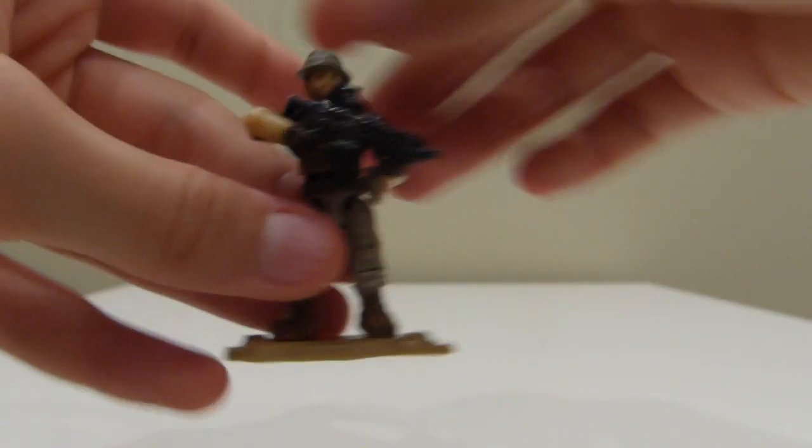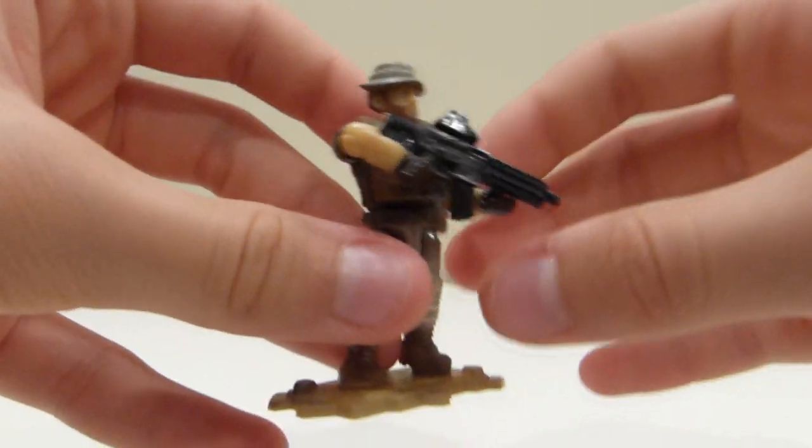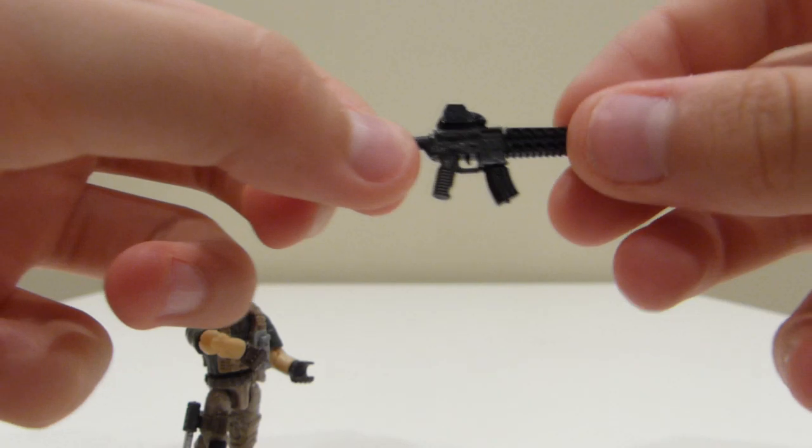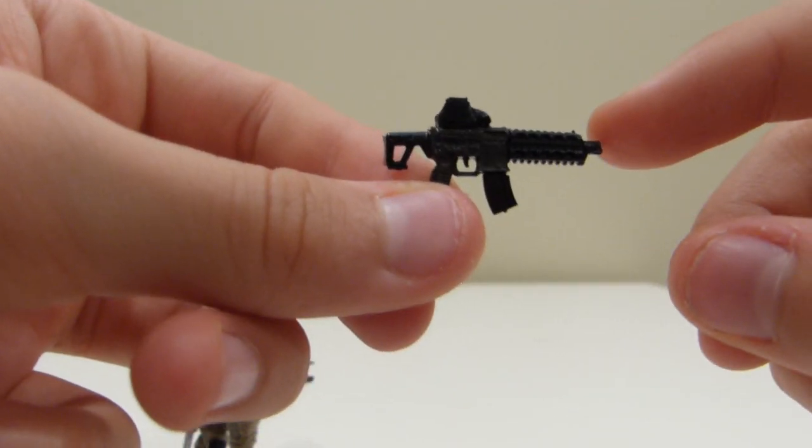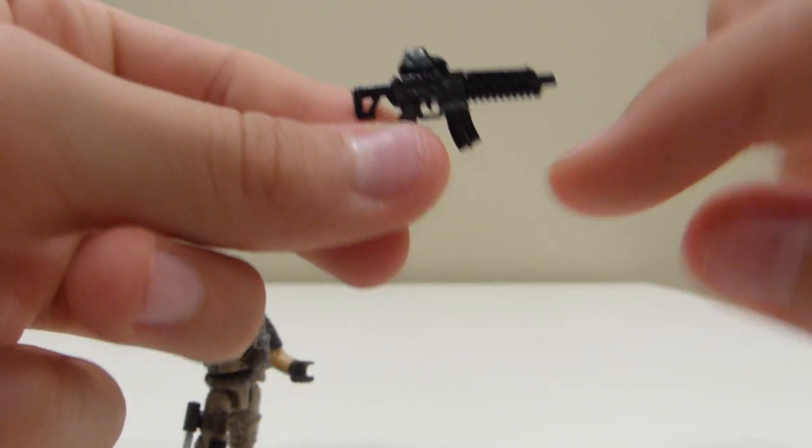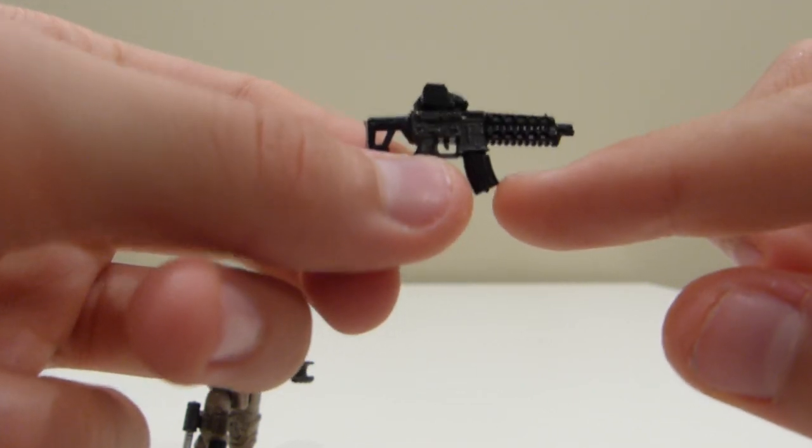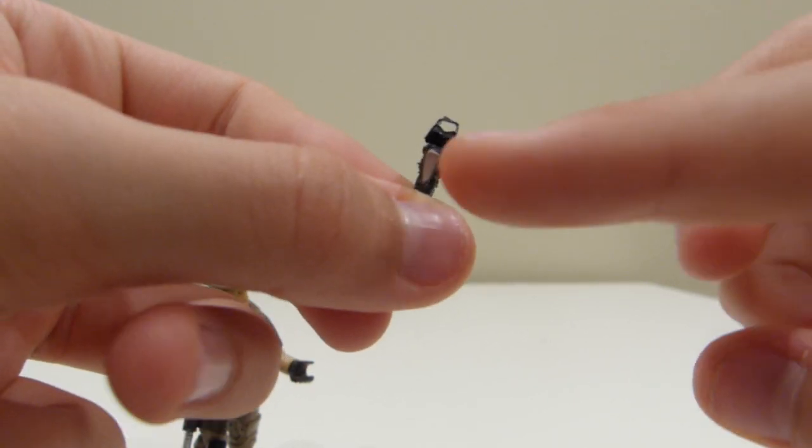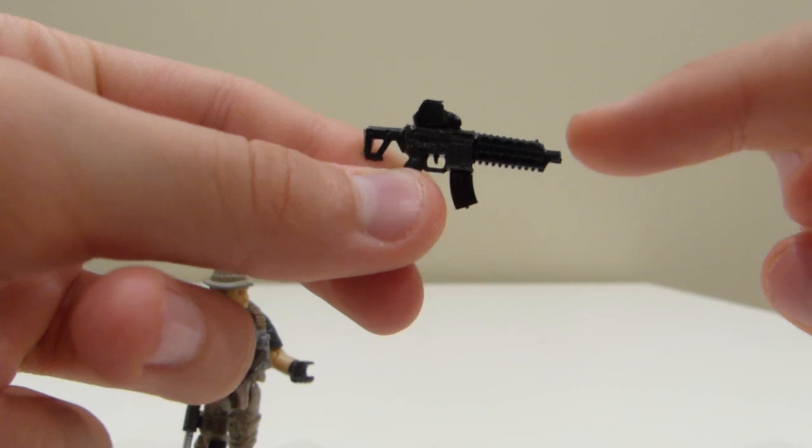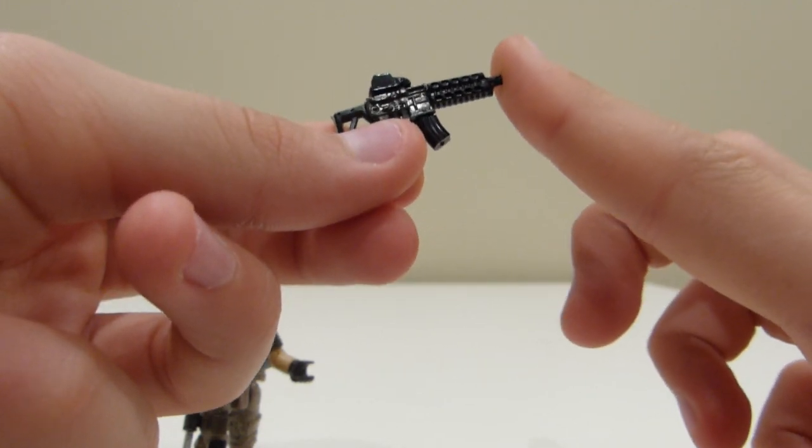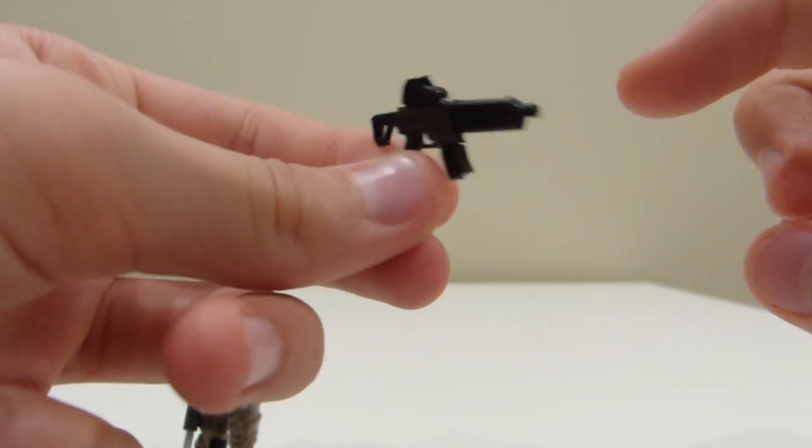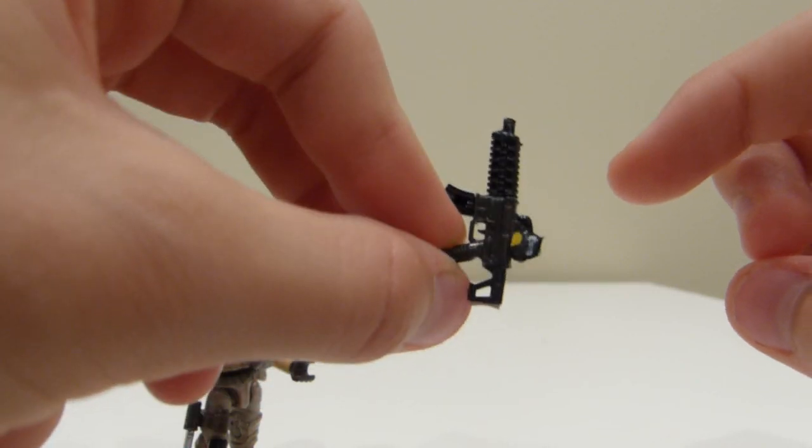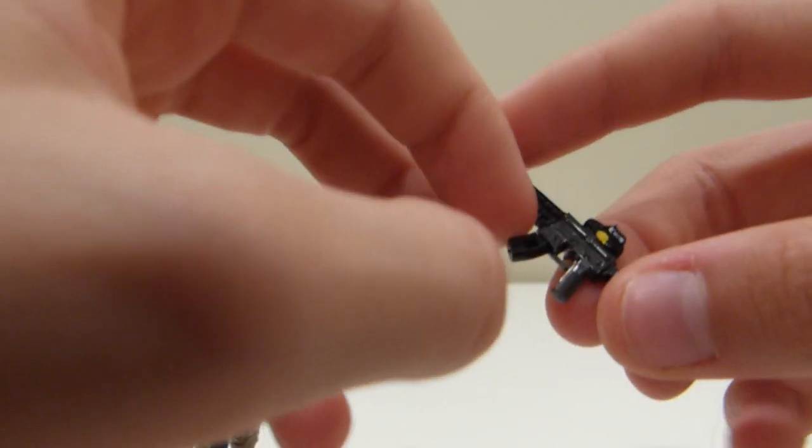Next, we have Captain Price. He has just kind of a random carbine that I made by taking one of the sniper rifles, giving it a banana mag, painting a bit on the stock, and then I cut off most of the barrel. So it's sticking out a little bit, kind of a short barrel sniper rifle, but I use it as a carbine.